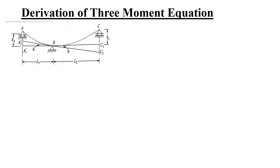L1 is the span of beam AB and L2 is the span of beam BC. Similarly, I1 is the moment of inertia of span AB and I2 is the moment of inertia of span BC. If the middle support B settles down, HA will be the relative position of support A with respect to support B after unequal settlement. Similarly, HC will be the relative position of support C with respect to support B after unequal settlement.